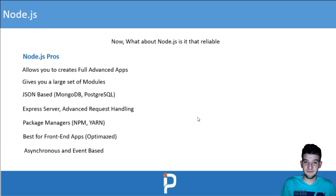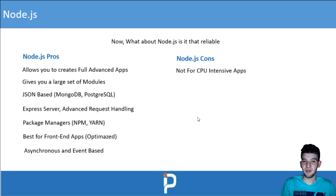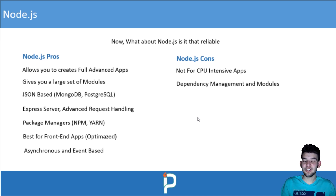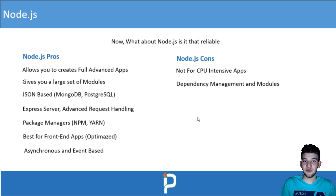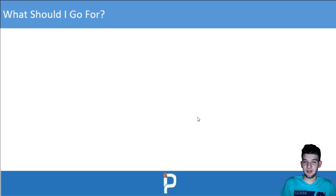For the cons of Node.js: it's not well-suited for CPU-intensive applications — for heavy CPU tasks, consider another language like PHP or Python instead. Also, dependency management and modules in npm can seem confusing on large applications with many built-in and custom modules. Since many modules are community-made, there can be bugs in newer packages.